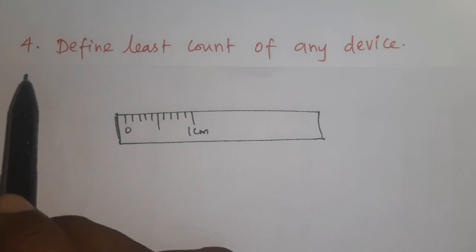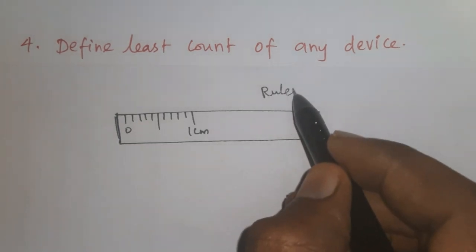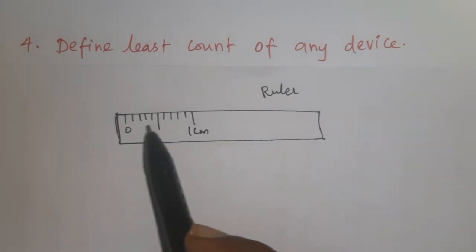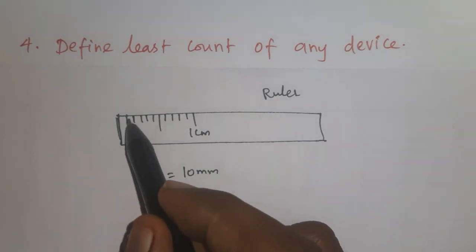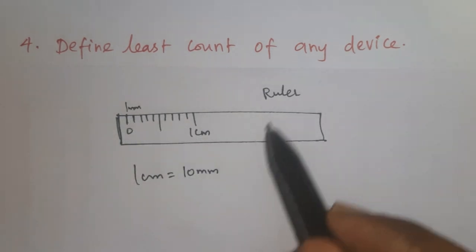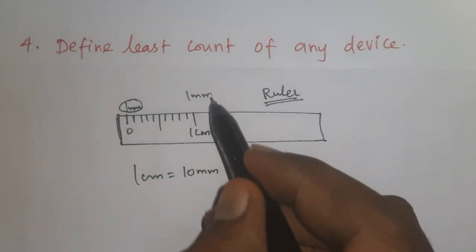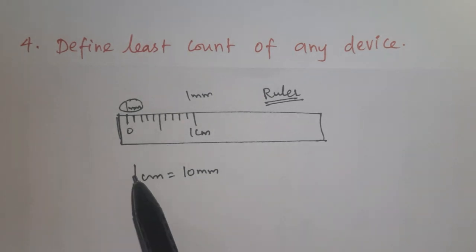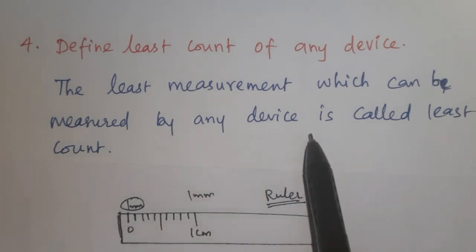Question number 4: define least count of any device. Consider a ruler used for geometric purposes. In a ruler, 10 divisions equal 1 centimeter, meaning 1 division equals 1 millimeter. So by using a ruler, the least measurement we can make is 1 millimeter. This 1 millimeter is the least count of the ruler. The least measurement which can be measured by any device is called its least count.